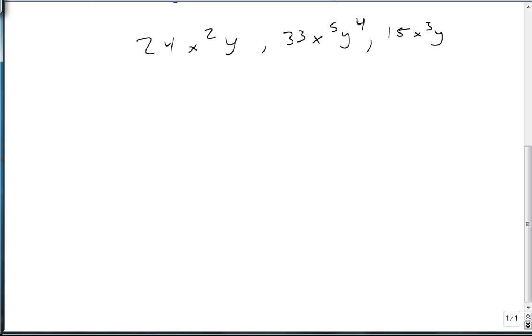Well for our numbers, we break them down again. 24 is 2 and 12, which is 2 and 6, which is 2 and 3. So I have 2 cubed times 3 to the 1st. 33 is just 3 times 11, so 3 to the 1st times 11 to the 1st. 15 is 3 and 5, so 3 to the 1st times 5 to the 1st. Then we've got x squared and y to the 1st, x to the 5th and y to the 4th, and x cubed and y.